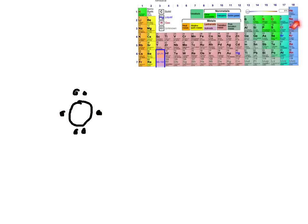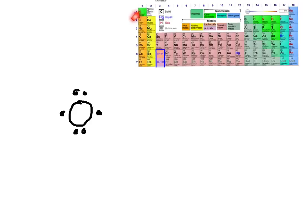Here's a quick way to figure out how many bonds an atom needs. If you count over from the noble gases, all atoms in group 17 need one covalent bond, group 16 needs two, group 15 needs three, and group 14 needs four. Hydrogen is special — it has one valence electron and only needs one more to be stable, so it makes one bond.